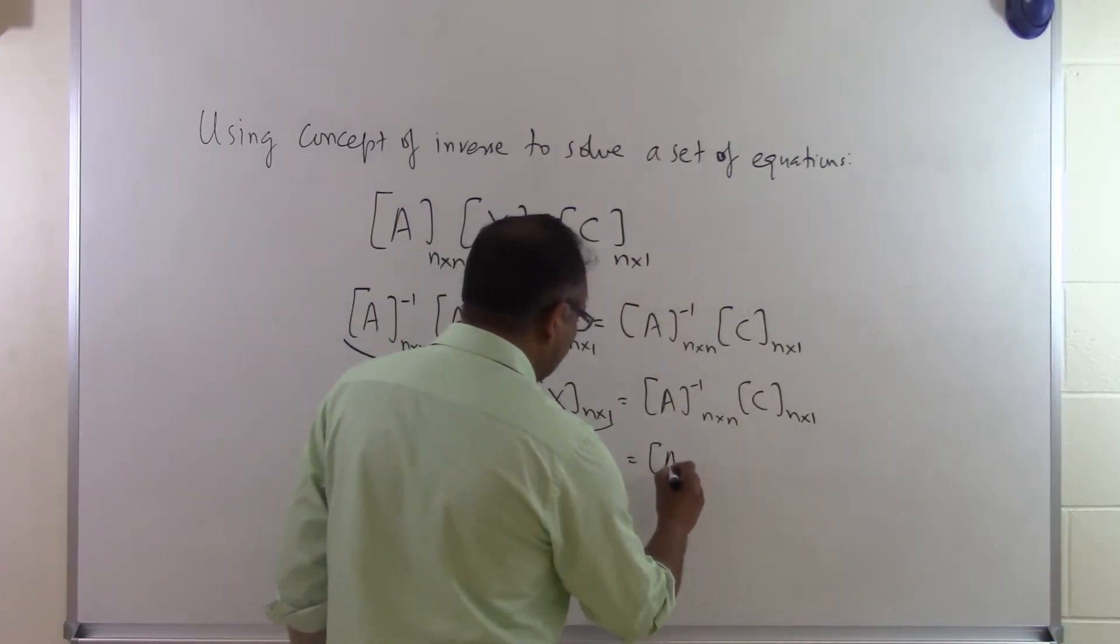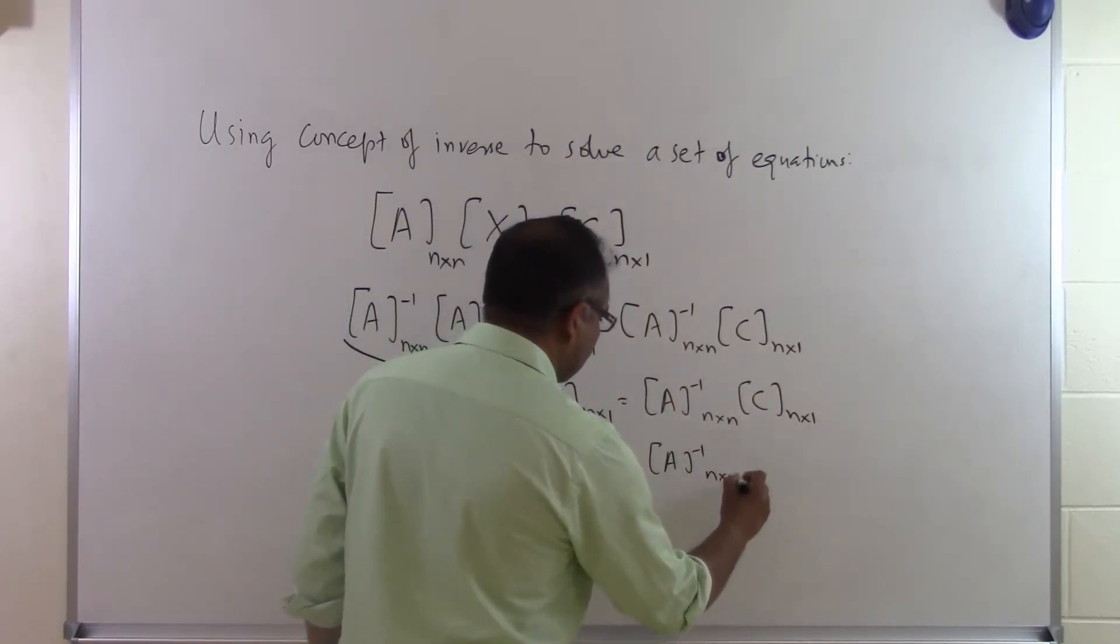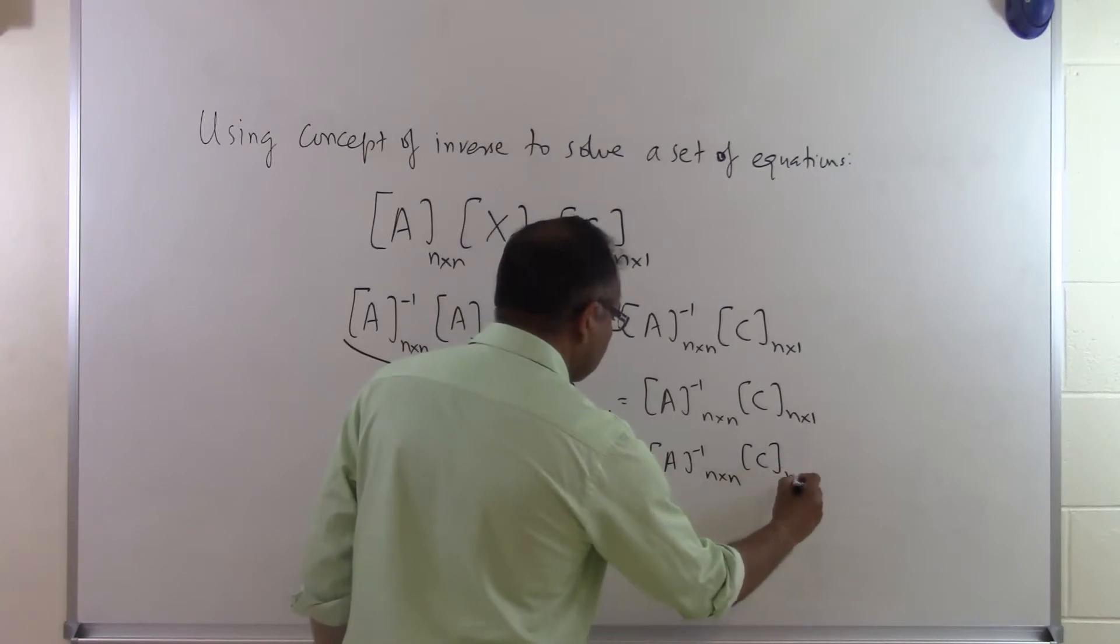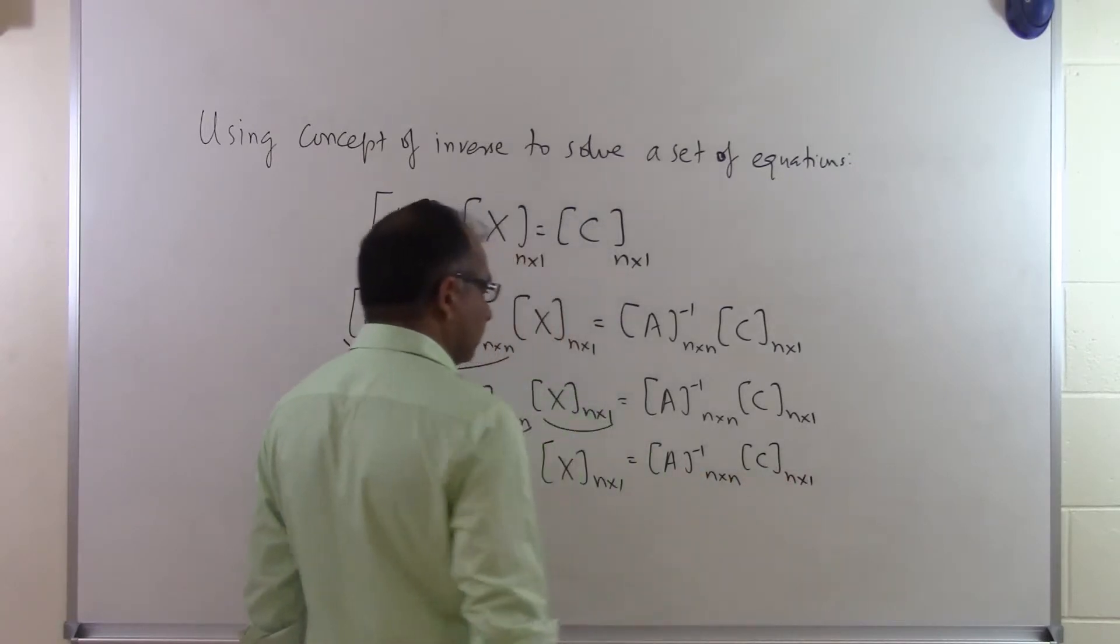So that will be equal to A inverse times n by n matrix times C matrix.